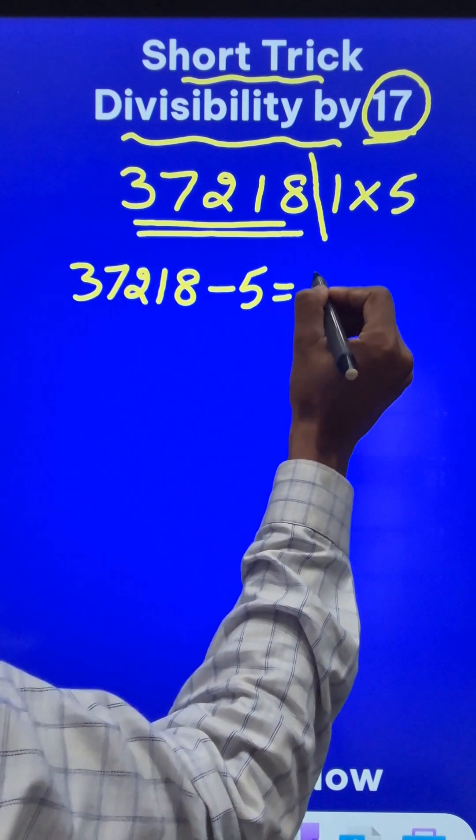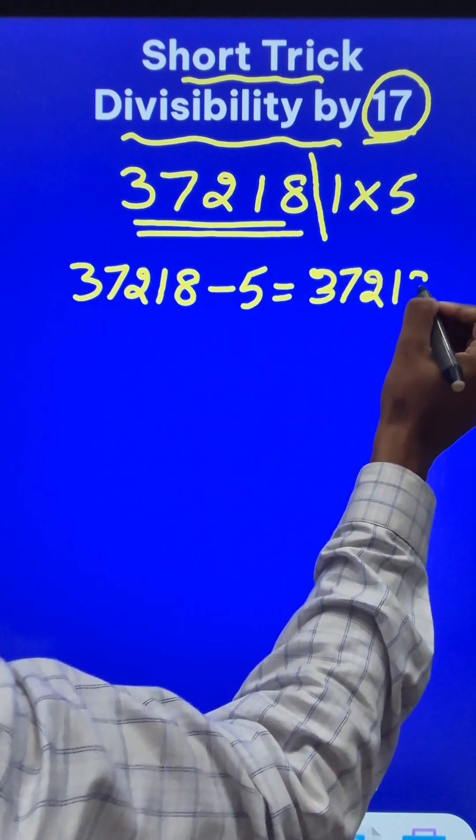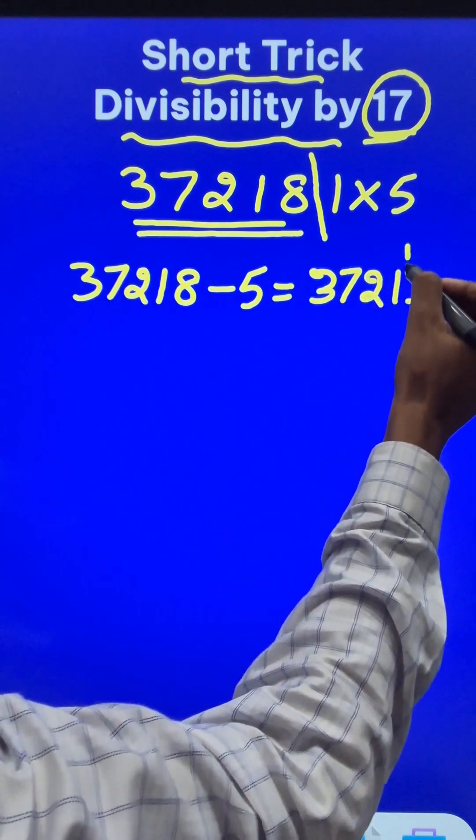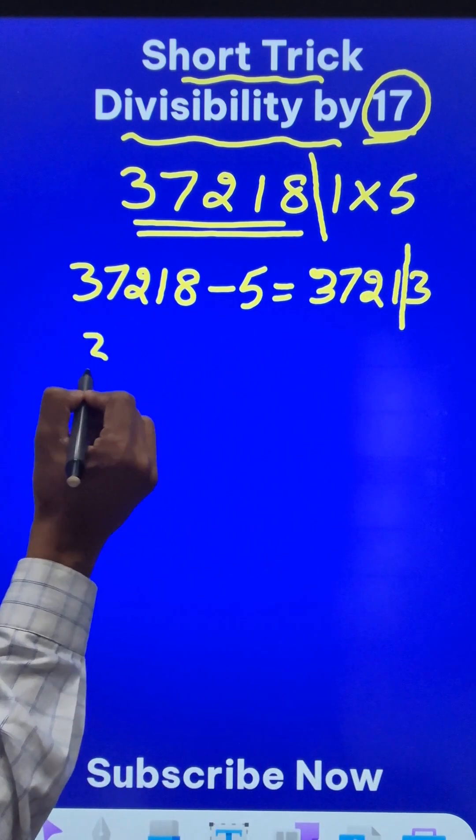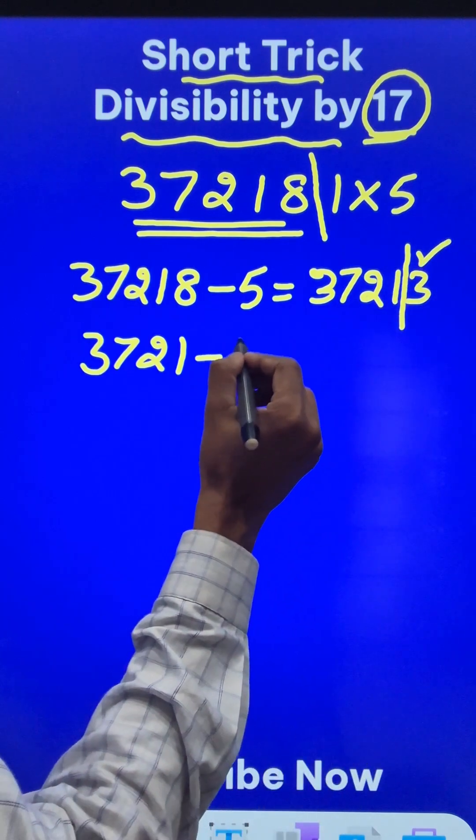that is 5 from this. So you get 37213. Now since this is also a big number, you have to separate out the last digit again. So you get 3721 as the remaining number, subtract 5 times 3, that is 15 from this